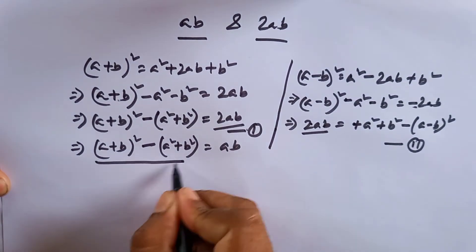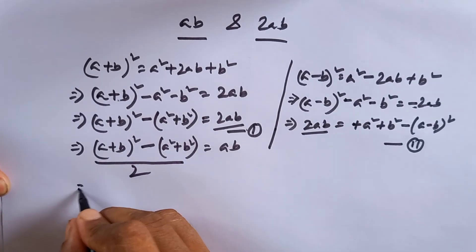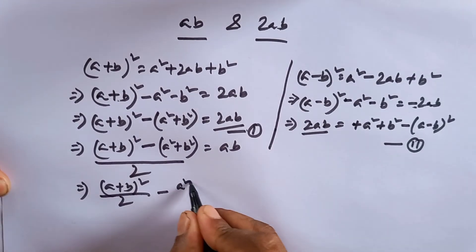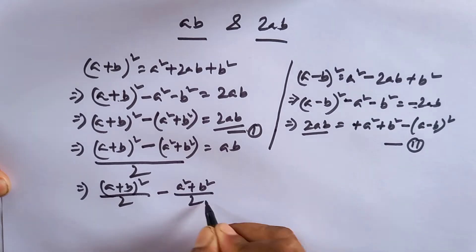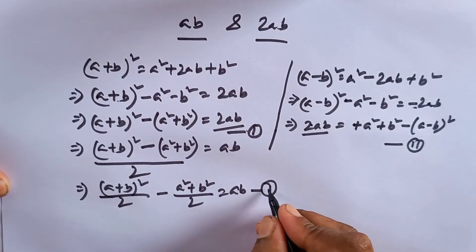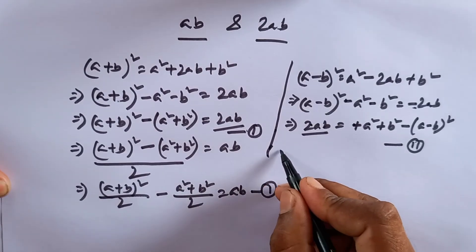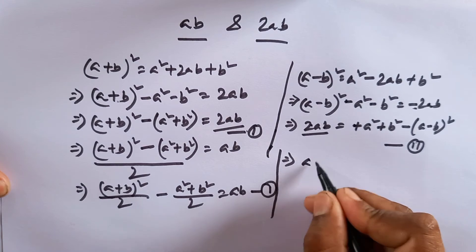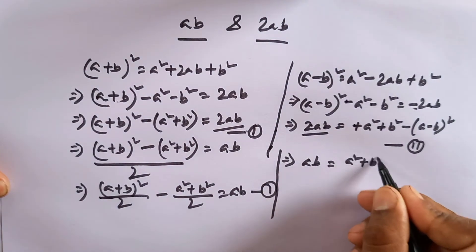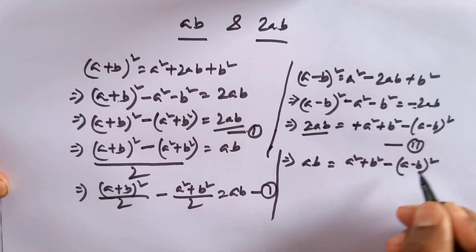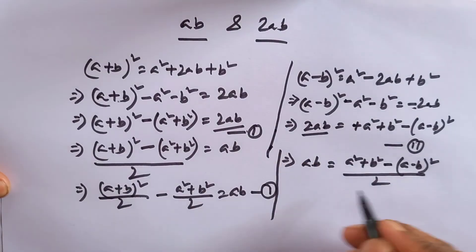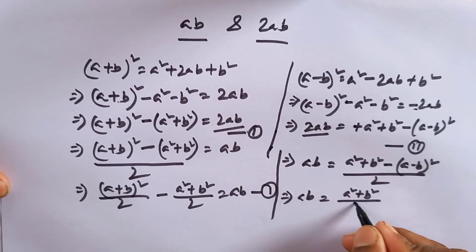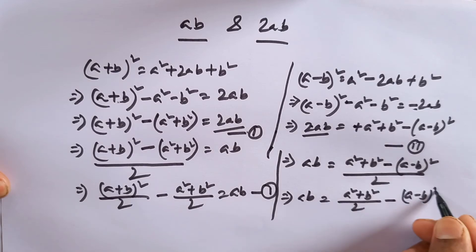So, A plus B whole square minus A squared minus B squared equals 2AB. Dividing by 2, you can write: AB equals A plus B whole square by 2 minus A squared by 2 minus B squared by 2. The second formula of AB is: AB equals A squared plus B squared minus A minus B whole square, all divided by 2.